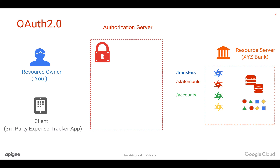Let's say the client is a third-party application trying to get access to some set of APIs so that it can display various expense reports from your bank account. And the authorization server is Apigee's API management platform, which XYZ bank is using to securely expose its APIs to the outside world.